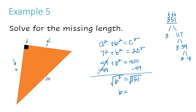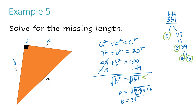So I can rewrite the radical as the square root of 3 × 3 × 3 × 13. I can pull out a group of 3s, and I'm left with 3 times the square root of 3 × 13. Since 3 and 13 can't be broken down further, I multiply them back together: 3 times 13 is 39. So the length of side B is 3 square root 39.